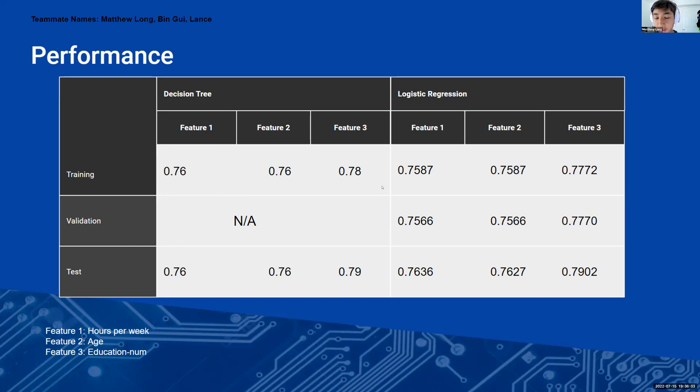And for logistic regression, the reason why it takes different decimal points is because the logistic regression functions from TensorFlow provided more detail in its output. So feature one had 0.7587, feature two had the exact same value, and feature three had 0.772. And as you can see, feature three performed the best on both sides, and this trend did the same through the validation and training set.